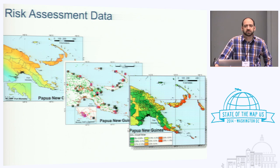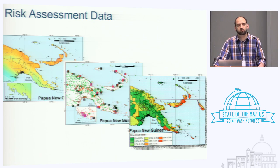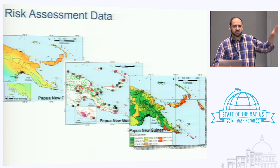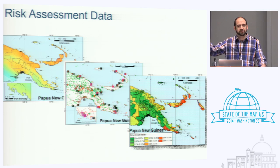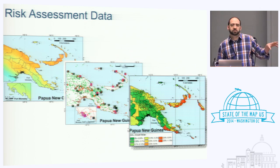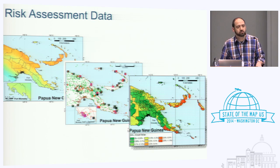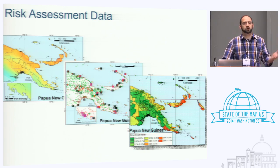For a long time GFDRR was funding risk assessments and the general process would be: find the best scientists and engineers, send them out to work with partner governments. They'd go around to different ministries, collect data, disappear, run their models, come back six to ten months later, convene a stakeholder workshop, present 'this is your risk,' and hand over the results in a shiny PDF.